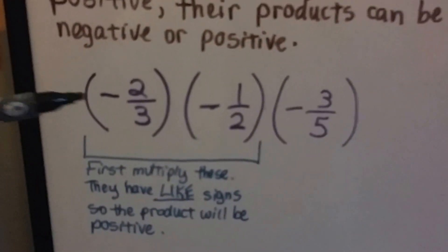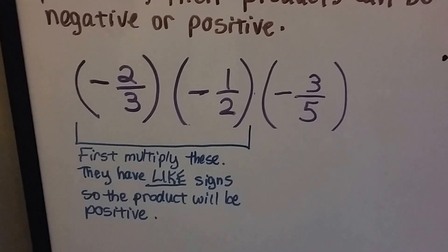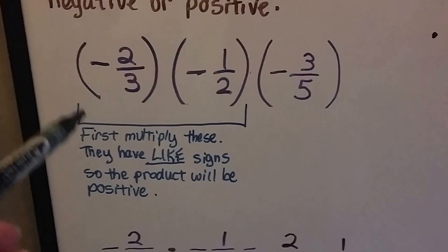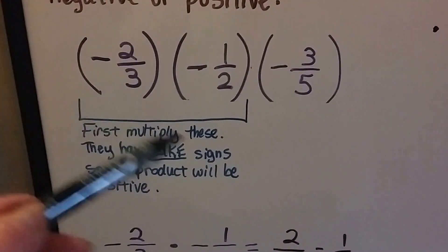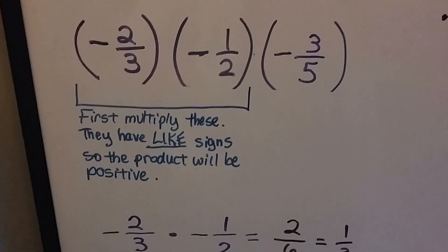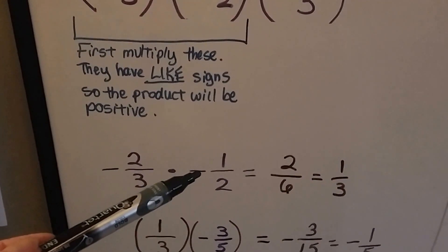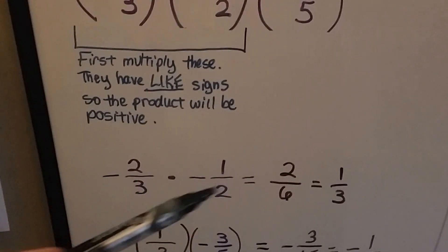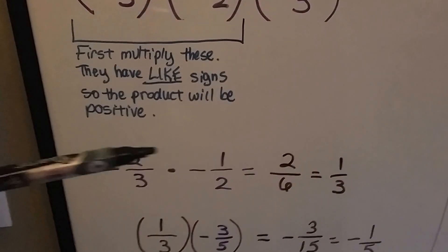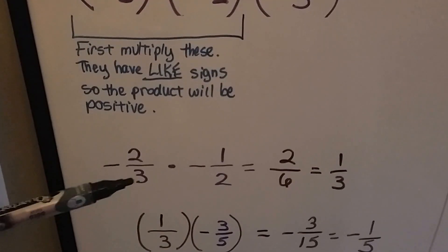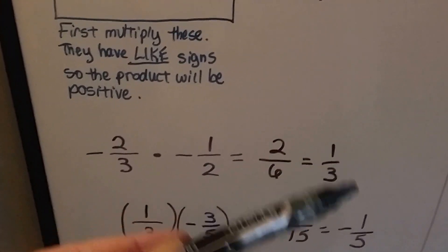So we need to multiply negative two-thirds times negative one-half times negative three-fifths. The first thing we're going to do is multiply the first two together, get a product, and then multiply it by the negative three-fifths. A negative times a negative makes a positive — they have like signs — so we multiply numerators across and denominators across and get two-sixths, or one-third.